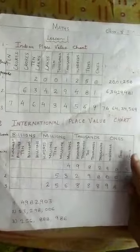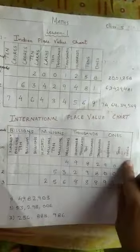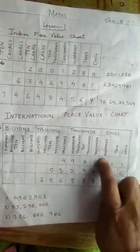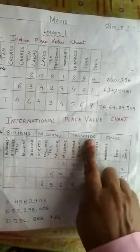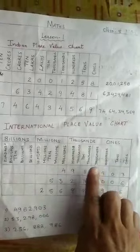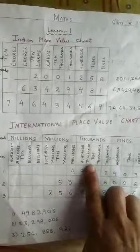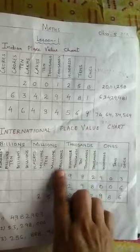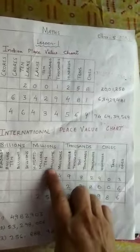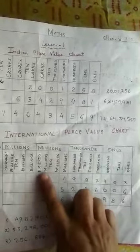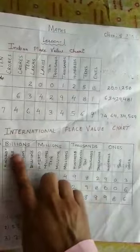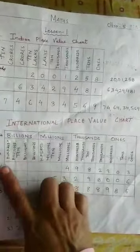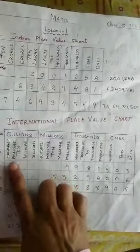In the ones period, the three places are ones, tens, and hundred. In the thousands period: thousand, ten thousand, and hundred thousand. In the millions period: million, ten million, and hundred million. In the billions period: billion, ten billion, and hundred billion.